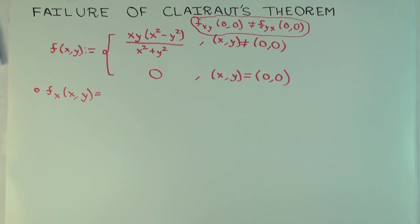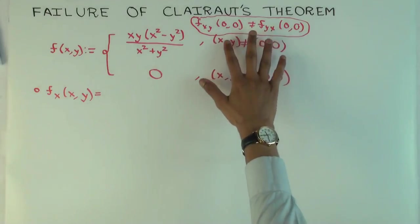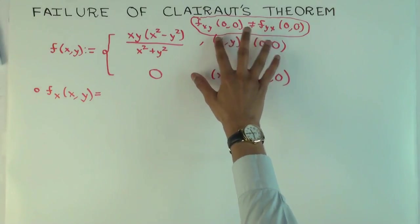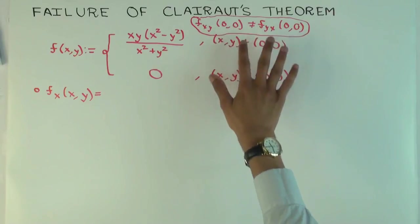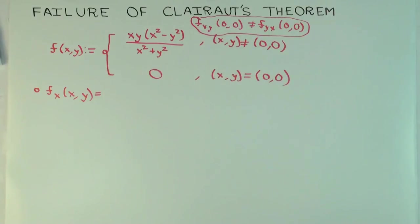Okay, and the reason it fails is that they are not going to turn out to be continuous. So, Clairaut's theorem says that if they are both continuous around the point, then they are equal, but they will turn out not to be continuous. Okay, let's start out by trying to calculate these expressions.